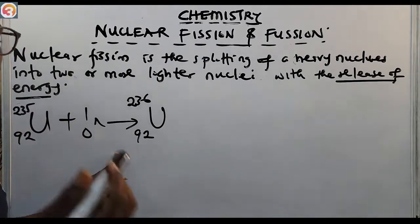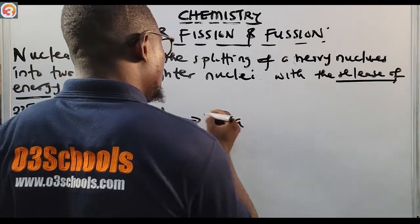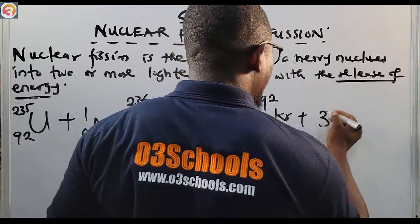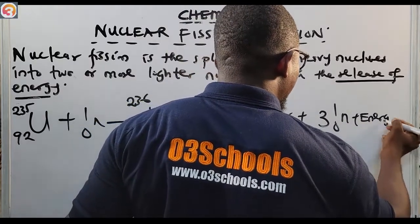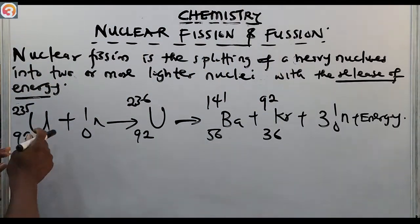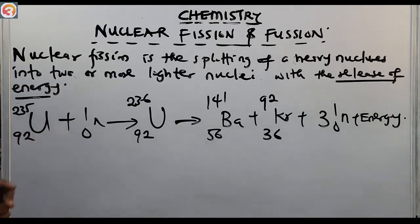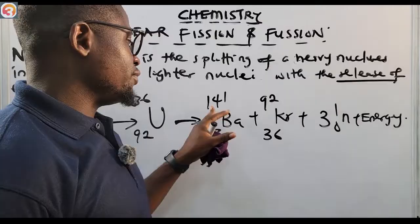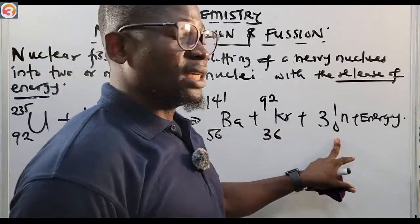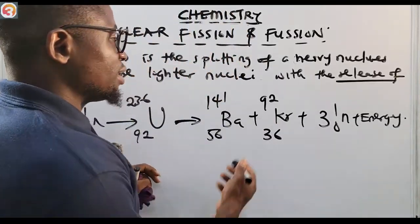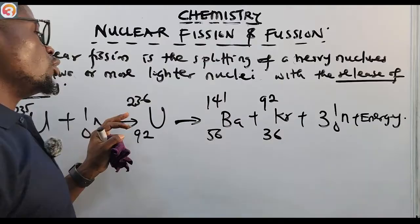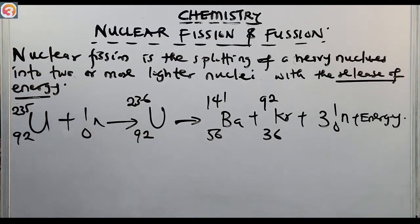The splitting gives us barium-141-56 plus krypton-92-36, plus 3 neutrons, plus energy. If you calculate the masses: 141 plus 92 plus 3 neutrons equals 236, and 56 plus 36 equals 92 — the masses and nuclear charges both correspond to uranium-236-92. So this is an example of nuclear fission.